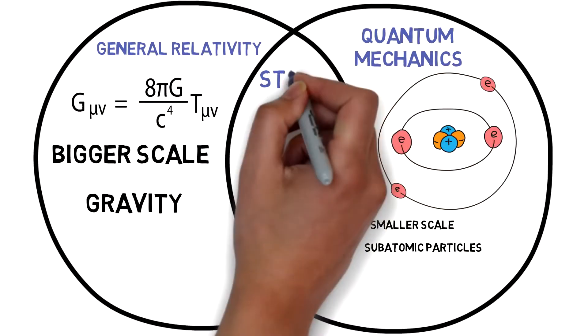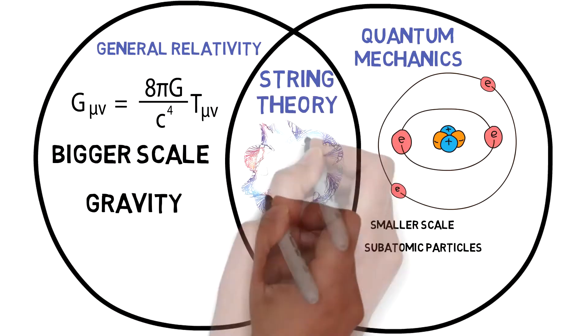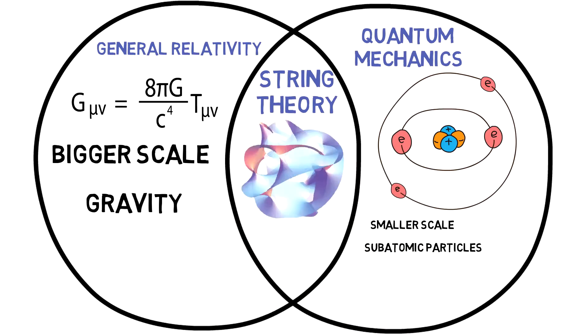This is where string theory comes into play. It is called the theory of everything because it is a unifying theory. It makes quantum mechanics and general relativity compatible with each other, and therefore string theory is able to explain everything under one set of principles and one unifying theory. But what is string theory?